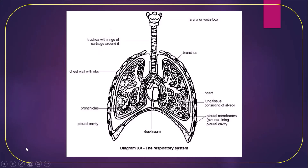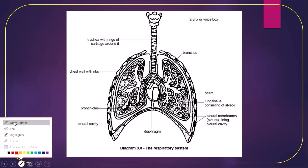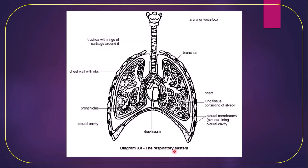Follow the picture of the human respiratory system attentively. The top triangular-shaped structure is the larynx or voice box. Just beneath the larynx is a long tube-like structure formed by cartilaginous rings — this is called the trachea. The trachea then divides into two branches and enters both lungs; these branches are called the bronchus. The bronchus again divides into different branches inside the lungs.